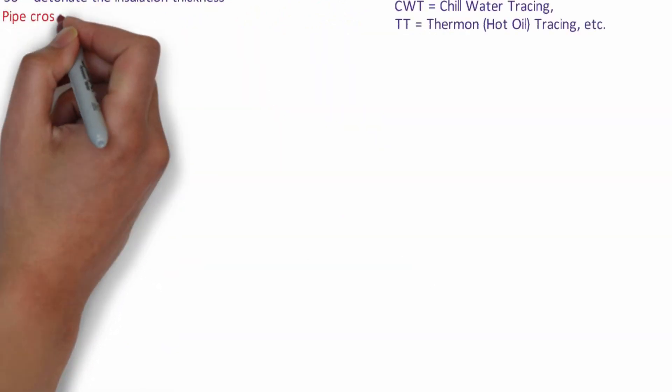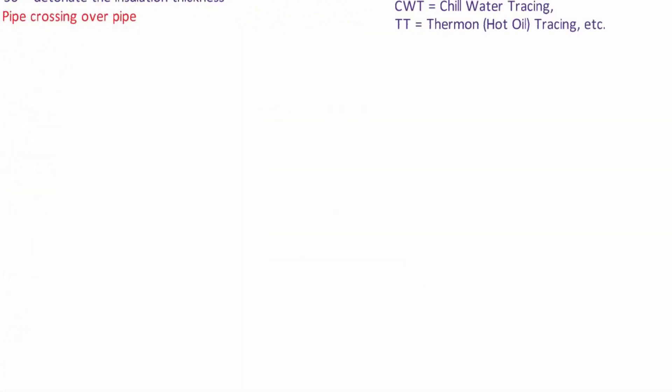Now there are two methods to illustrate when pipes cross on drawings but are not physically connected. These two methods are shown on your screens right now. Either use a small hump to show one going over the other or break one of the lines very near the other to show it going under it.